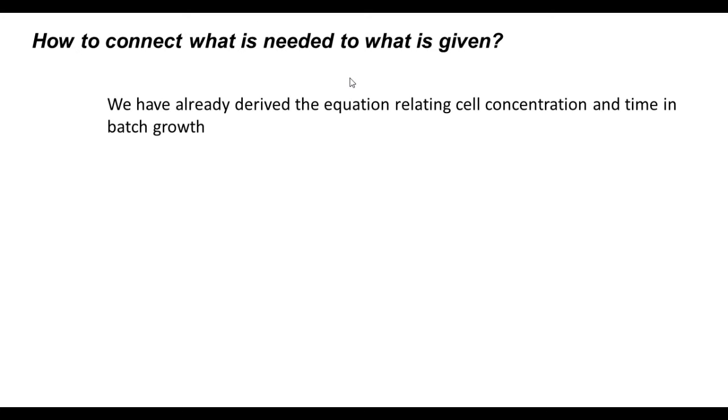Now, how to connect what is needed with what is known. We have already derived the equation relating the cell concentration and time in batch growth in the previous lecture. The equation was this: 1 by μ ln of x by x₀ plus T0 equals the time.